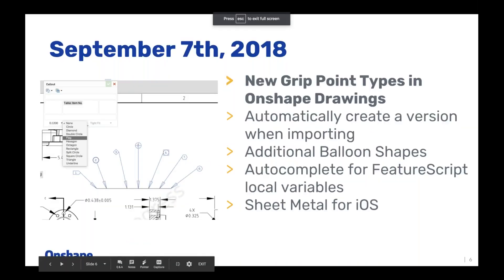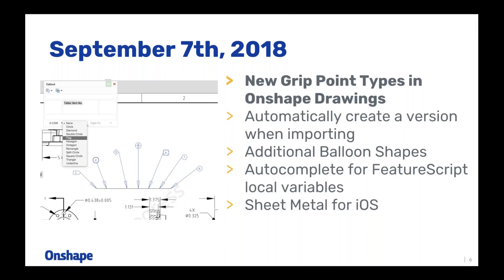The next improvement is big if you do a lot of Onshape work on mobile and work with sheet metal. As of the September 7th update, you can now create sheet metal parts from your iOS device. This is currently specific to iOS but will be coming to Android as well. So you can now create sheet metal parts on iOS devices — not just edit existing ones, but create new ones from scratch.